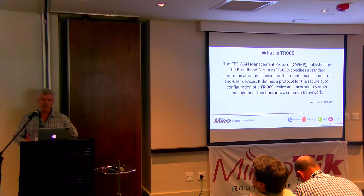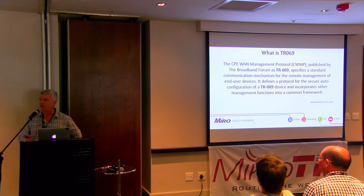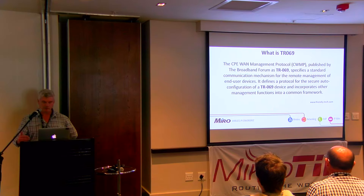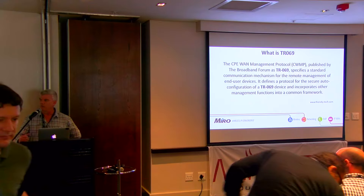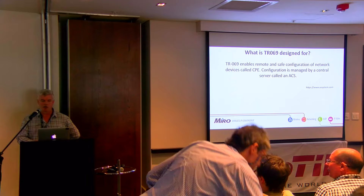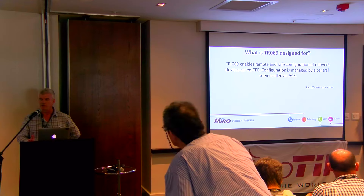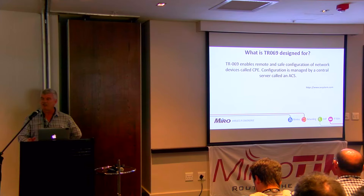TR069 is the CPE WAN Management Protocol, also known as CWMP. That makes you think immediately about SNMP, which is the Simple Network Management Protocol. There are a lot of parallel lines between SNMP and CWMP. So what can TR069 do? What's the specific job of TR069? What are we trying to achieve with TR069?